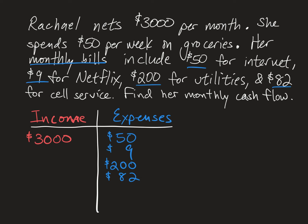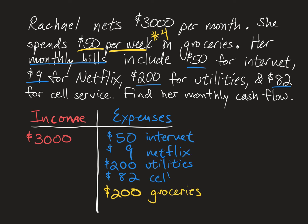The final expense Rachel has is groceries. $50 per week is not a monthly amount, so we assume four weeks in a month. To find the monthly expense, we multiply $50 by four to get $200 per month. It helps to label all of your expenses so you can keep your bills separate.